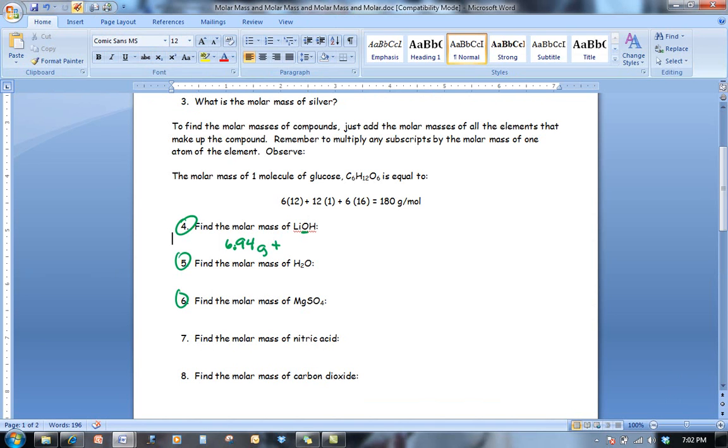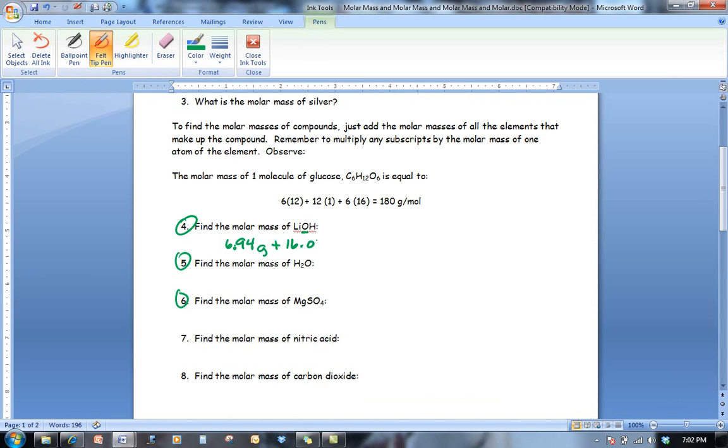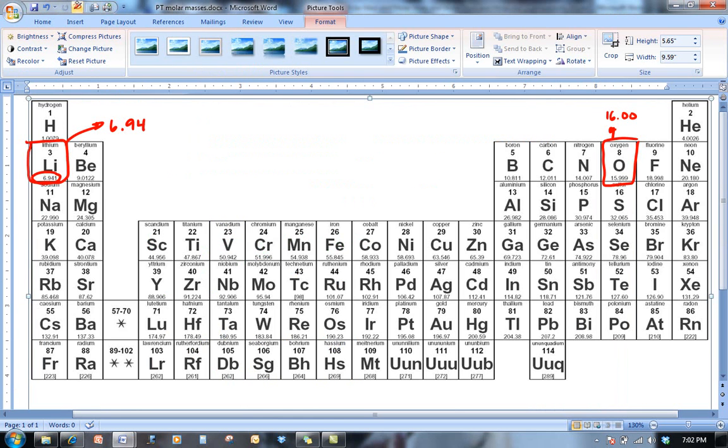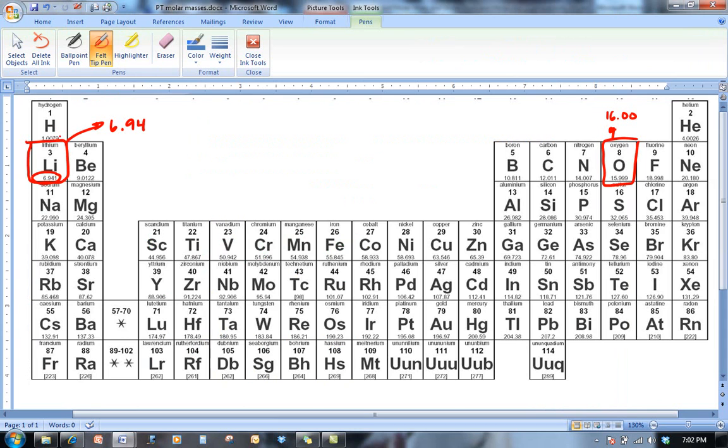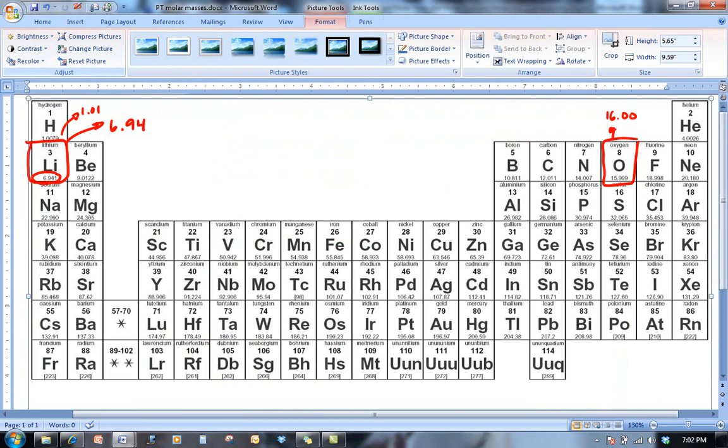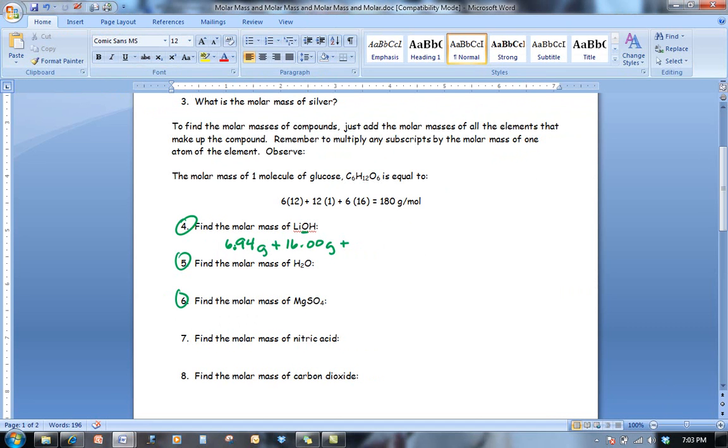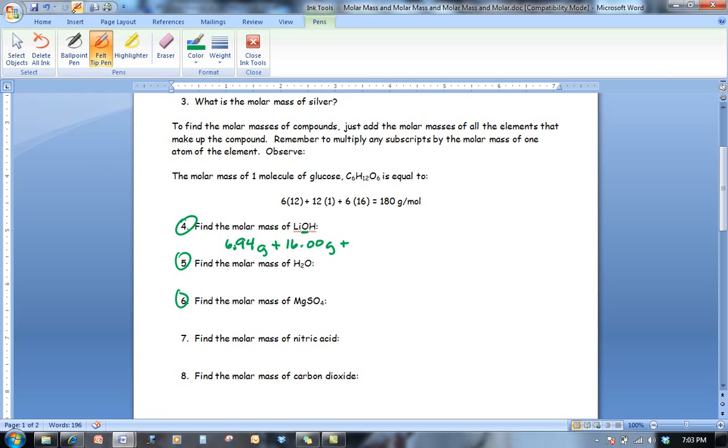So we're going to add 16 grams. And then we have to find the molar mass for hydrogen. Here, for hydrogen, we see that the molar mass is 1.0079. Rounding to the nearest hundredth, we can say that the mass is 1.01. Back to our worksheet, we're going to add 1.01 grams.